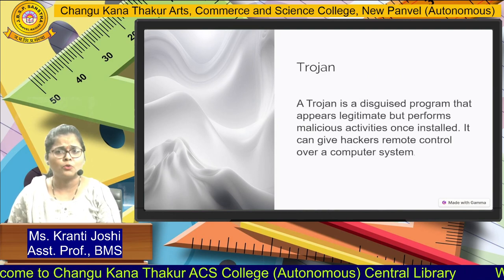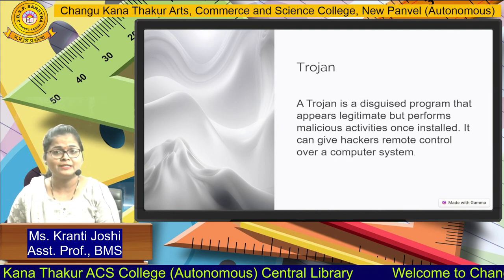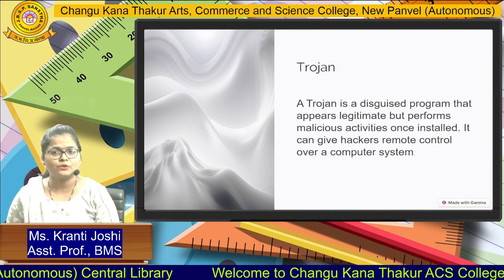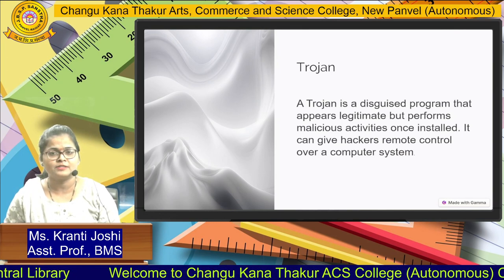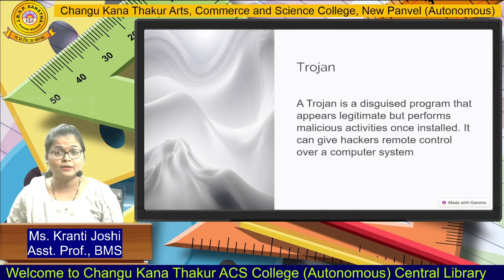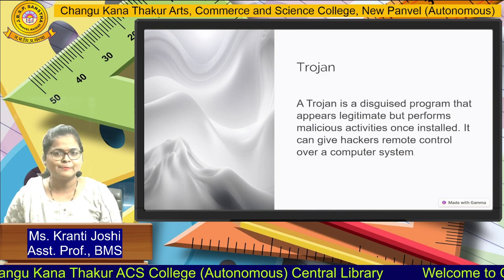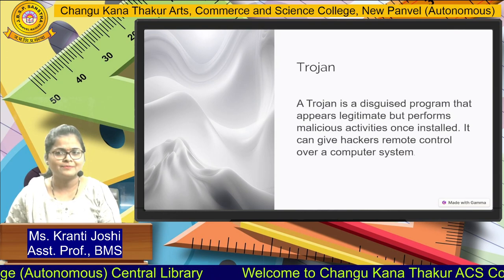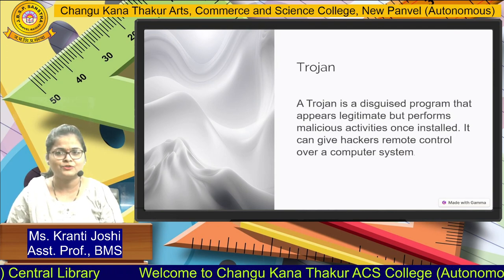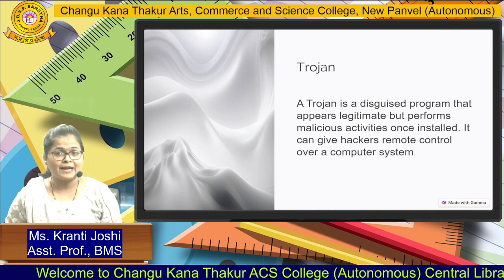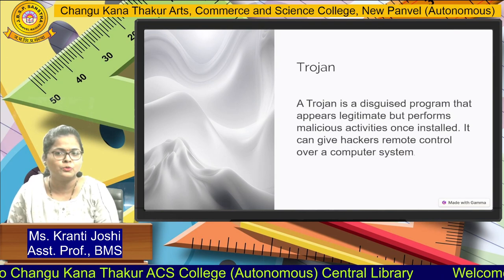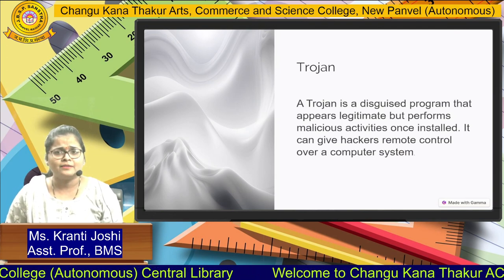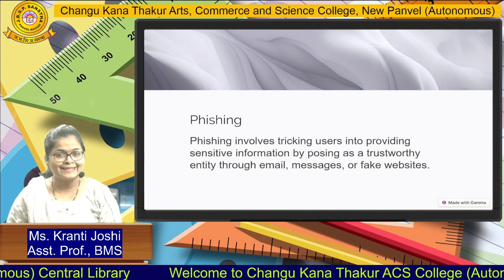The next logical threat is a Trojan. A Trojan is a malicious program that appears as legitimate software but performs malicious activity once installed. It can give hackers remote control over computer systems. For example, when a user wants free software and visits a spam website, that website shows a familiar-looking software. Once you download and install it, it may act as a malicious Trojan program.